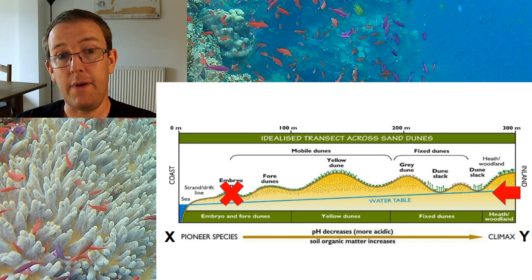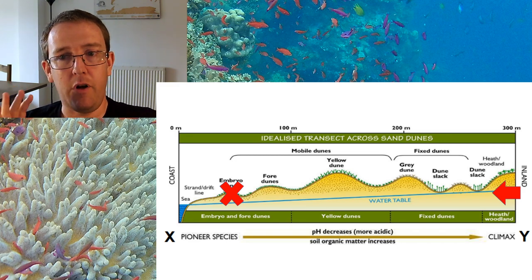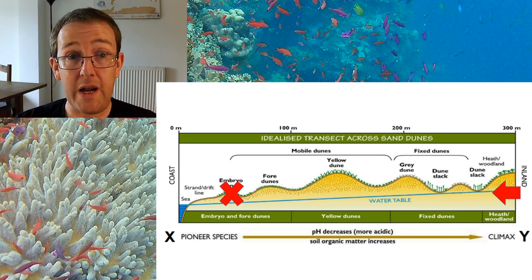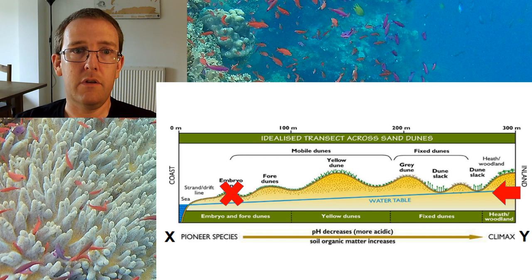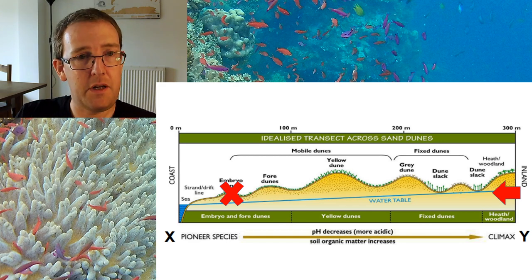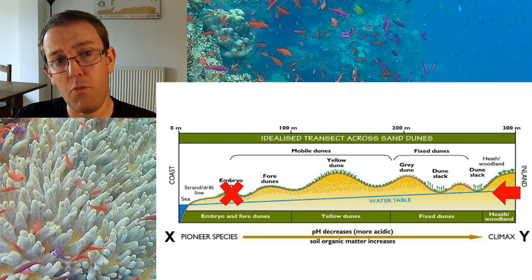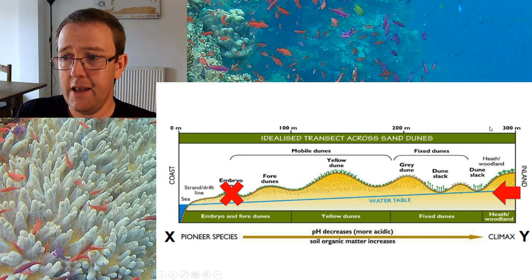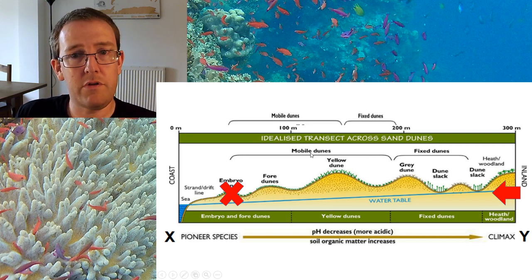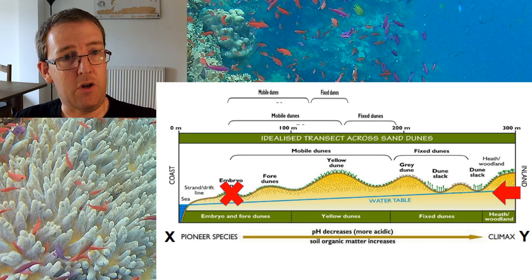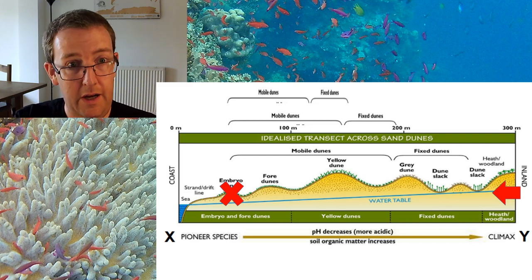If you want to conserve that, there's an argument to say that since we're causing the problem at the front, maybe we should stop the climax at the back. We should stop succession at the back and induce what's called a plagioclimax — which is basically a human-manufactured climax community — and there are various different ways to achieve that. Essentially, if you look at the brackets here, our mobile dunes and fixed dunes will get smaller and smaller: the front is not moving forwards but the back is moving in.